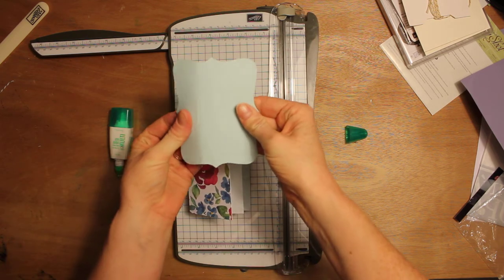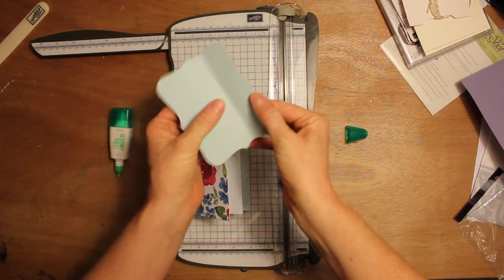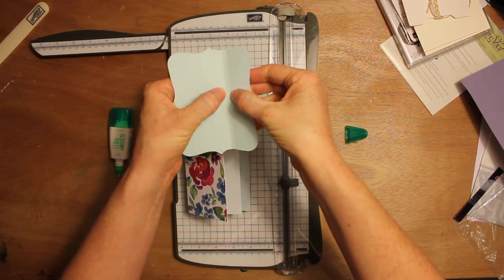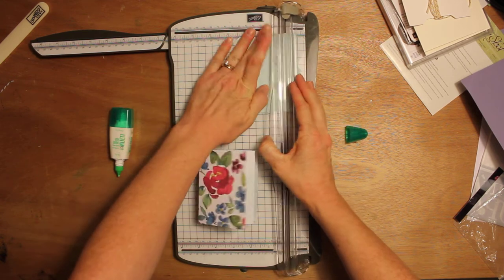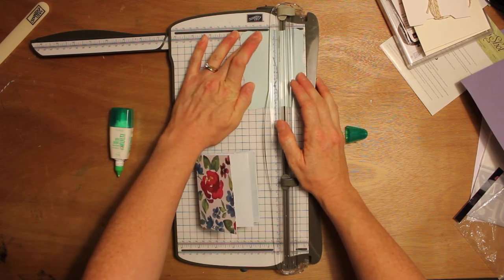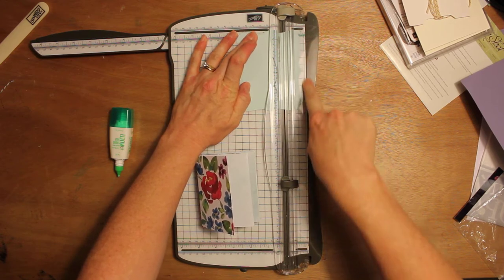I'm going to use the top note die to do this. So I've already scored two lines here, a couple of millimeters apart, and I kind of just roughly did that using the edge of the trimmer there.